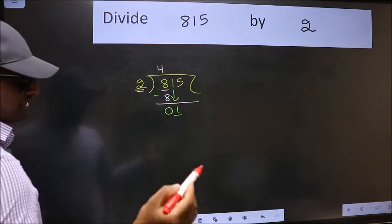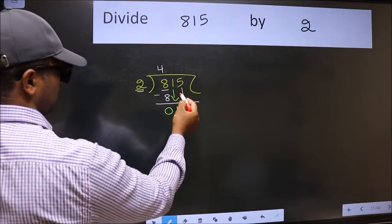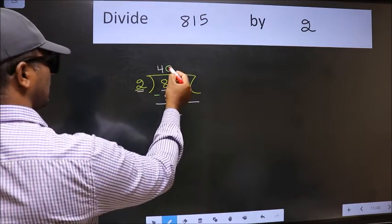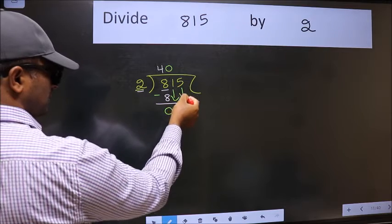So we should bring down the second number. And the rule to bring down the second number is we should put 0 here. Then only we can bring this number down.